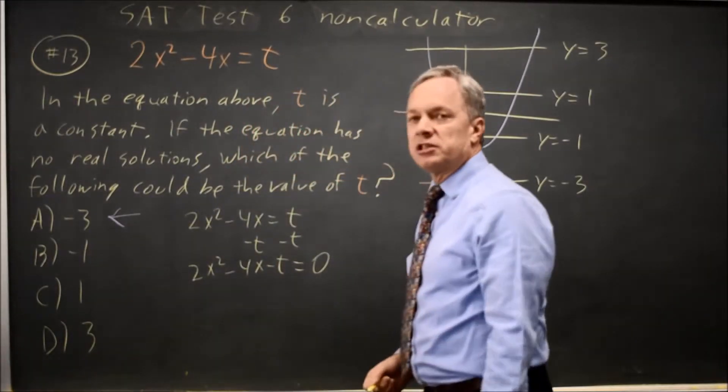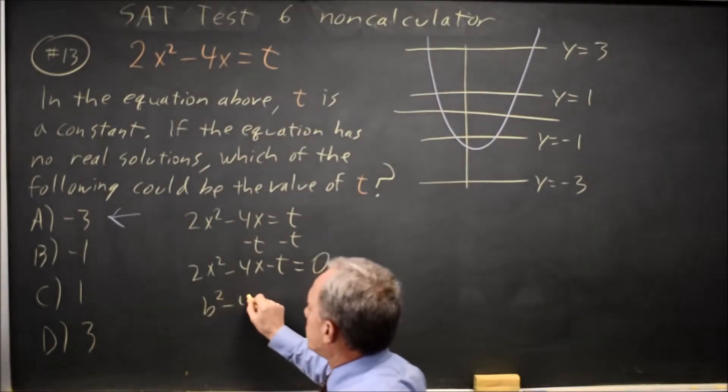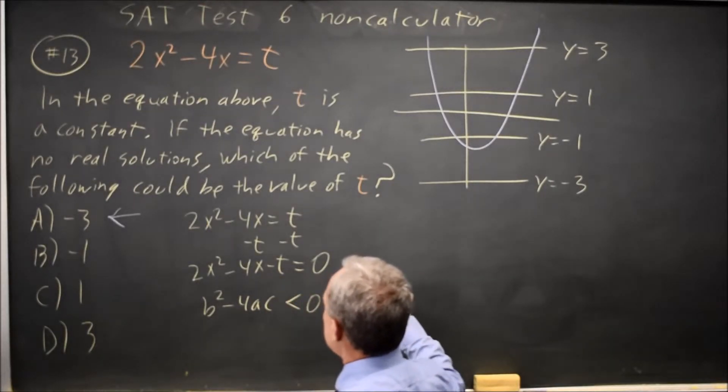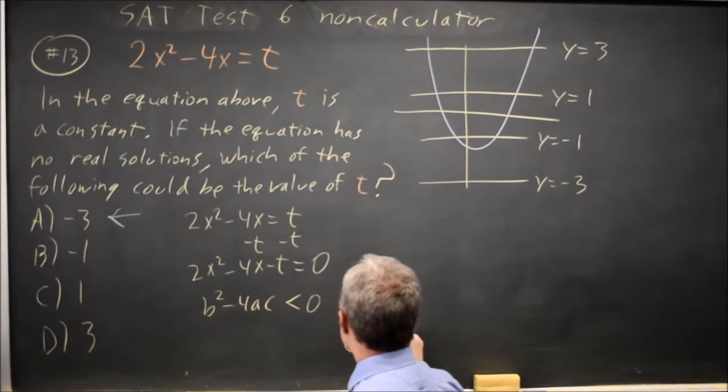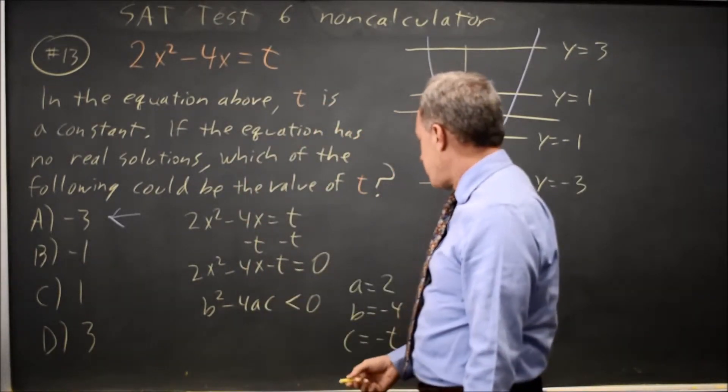To have no solutions, the discriminant, which is b squared minus 4ac, the discriminant has to be less than 0, where a equals the x squared coefficient 2, b equals the x coefficient negative 4, and c equals the constant, which is negative t. Remember, I moved the t from the right-hand side to the left, so t is now negative.